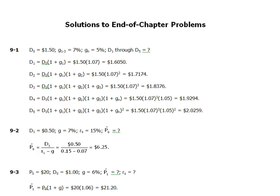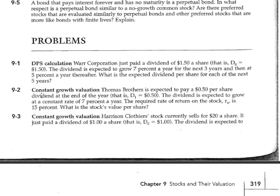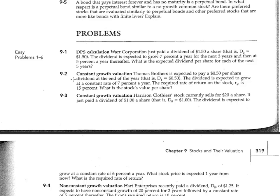Now we have the dividend per share for the next five years. Let's move on to problem 9-2: Constant Growth Valuation. Thomas Brothers is expected to pay a $0.50 per share dividend at the end of the year, so D1 = $0.50. The dividend is expected to grow at a constant rate of 7% per year, and the required return on the stock is 15%. What is the stock's value per share?